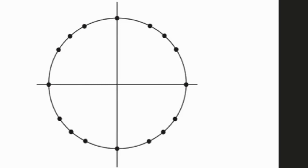This video is on the unit circle — I will be deriving the entire unit circle. What you're seeing on the screen is a unit circle, and it's called that simply because the radius from the center to any point is one, a single unit. For every dot that you're seeing, you're going to have three different things to fill in. I'm going to start off with these four dots, and each of those dots is going to have an ordered pair.